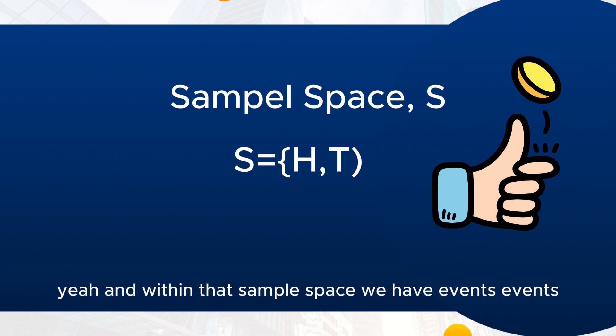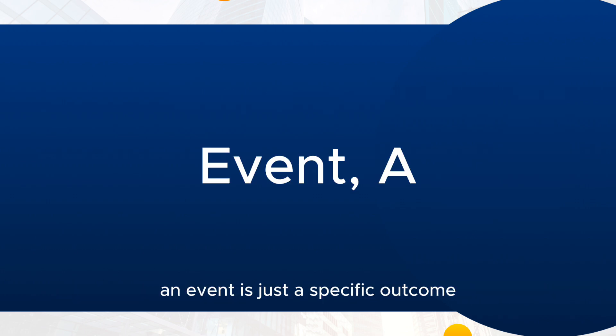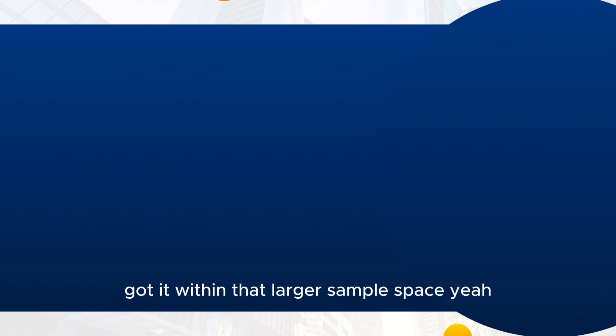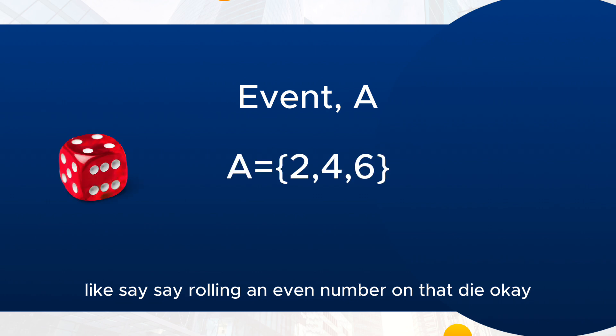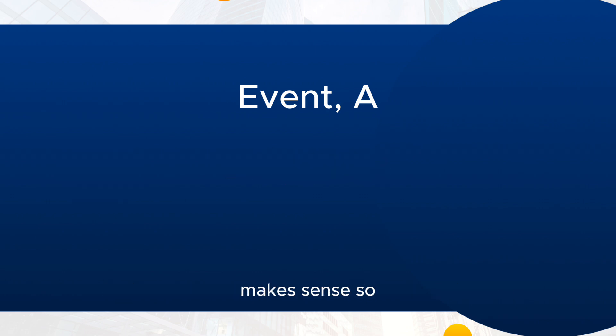And within that sample space, we have events. An event is just a specific outcome or a group of outcomes within that larger sample space. Like rolling an even number on that die — that narrows down our possibilities to two, four, and six. Makes sense. So how do we actually...